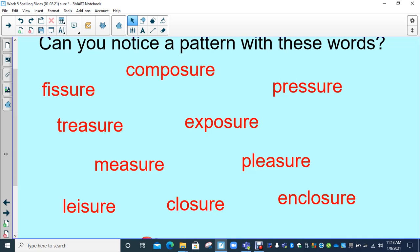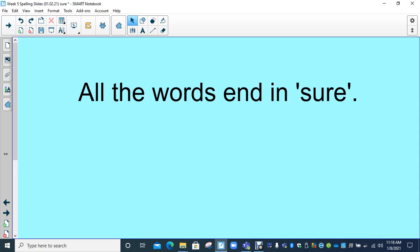So say them with me. We've got fissure, treasure, measure, leisure, and in the middle, composure, exposure, closure, and the last three, pressure, pleasure, and enclosure. What is the pattern? Now I'm hoping that you've spotted, and you're shouting out at the screen, that all the words end in s-u-r-e, like a sure sound.